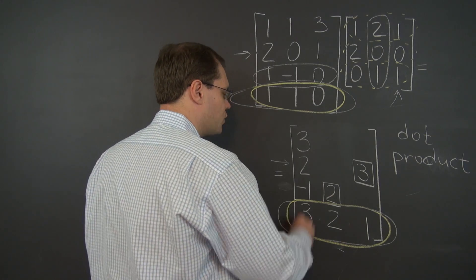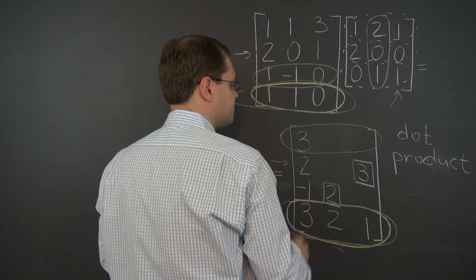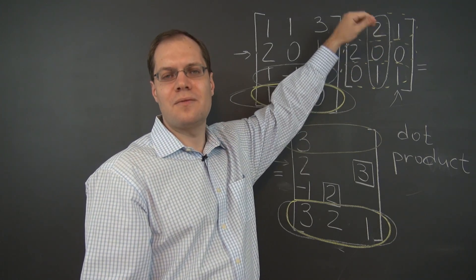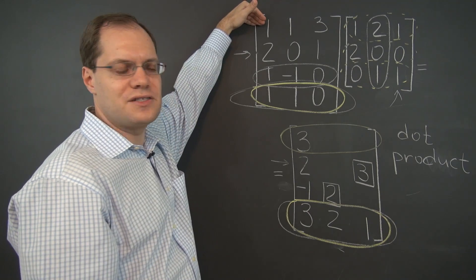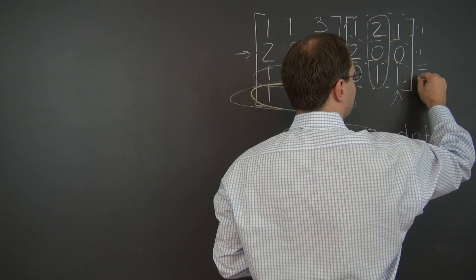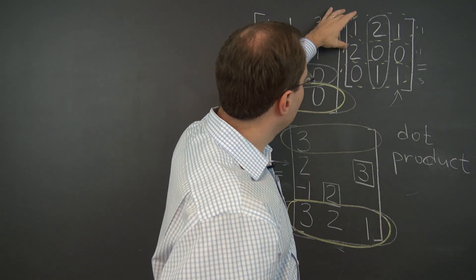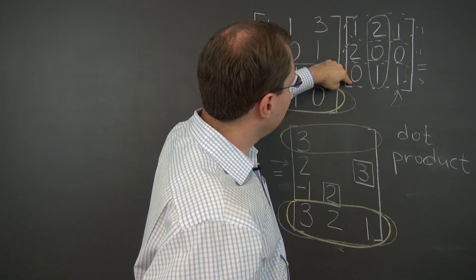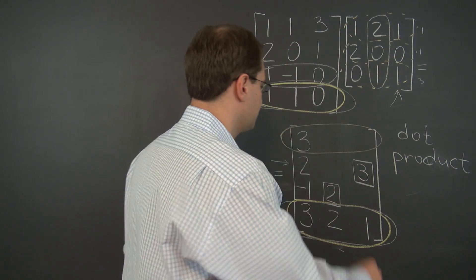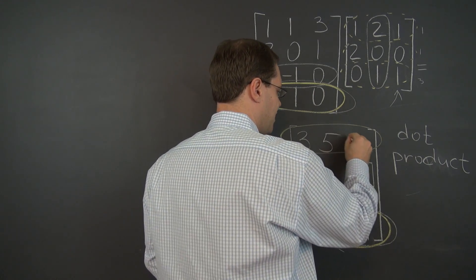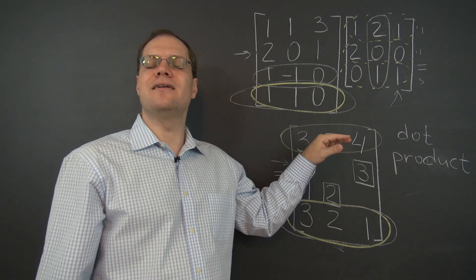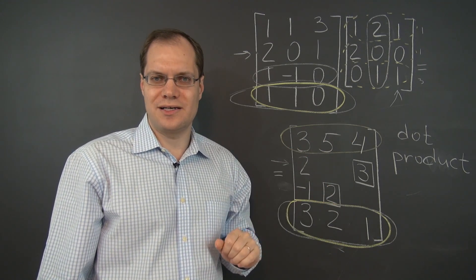Now let's go for the first row of the matrix. It would be the same three rows, but now the coefficients will come from the first row of this matrix — one, one, and three. So we have three, five, four. Three is correct, five, four. So now we're getting the resulting matrix one row at a time. That's the row perspective on matrix multiplication.